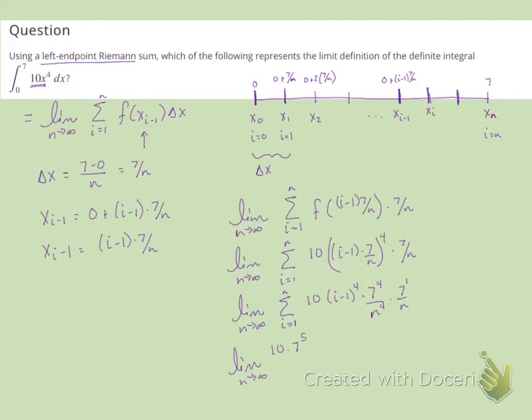And same thing with the n's. I have an n to the fifth. And then left over inside the summation is this i minus 1 to the fourth. And that's our answer.